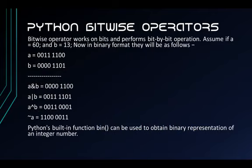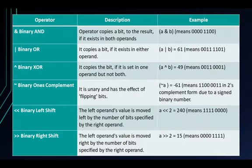Next are the bitwise operators, which work on bits and perform bit-by-bit operations. Python's built-in bin() function can be used to obtain the binary representation of an integer. There are 6 operators: the binary AND operator copies a bit to the result if it exists in both operands; the binary OR operator copies a bit if it exists in either operand; the binary XOR operator copies a bit if it is set in one operand but not both; the binary ones complement operator is unary and has the effect of flipping bits; and the binary left shift operator moves the left operand's value left by the number of bits specified by the right operand.